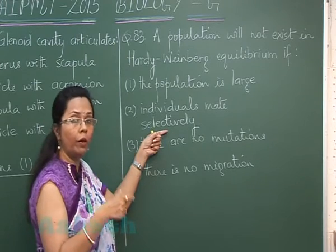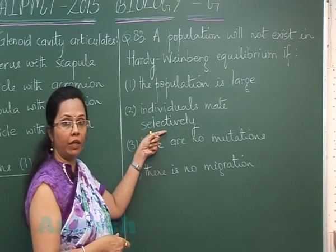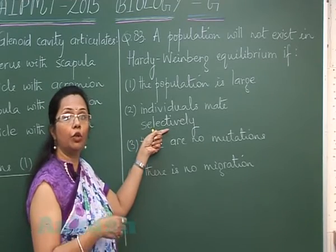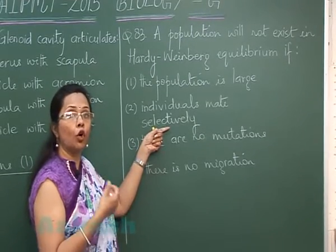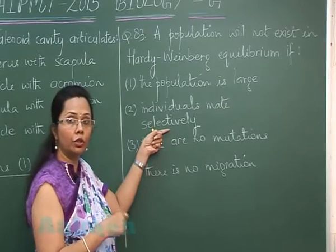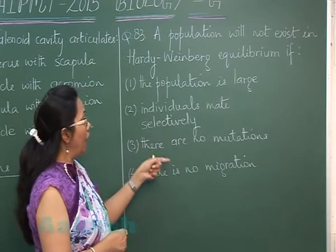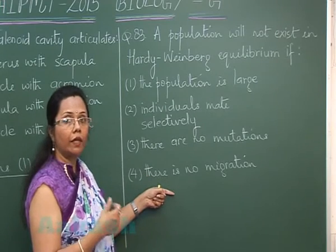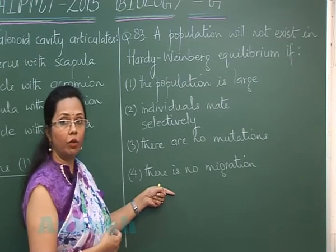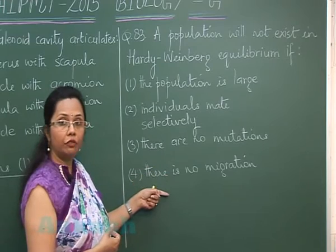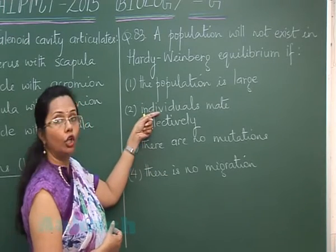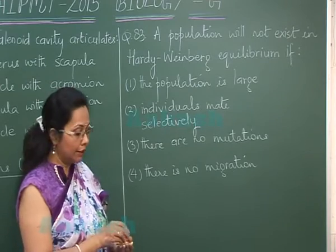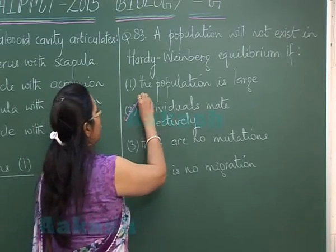When individuals mate selectively, that means mating within a closed group — so it is non-random mating. Whenever there is non-random mating, it will increase homozygosity and reduce heterozygosity. There are no mutations and no migration, which are conditions for maintaining Hardy-Weinberg equilibrium. The only condition not met here is non-random mating, so our answer is option 2.